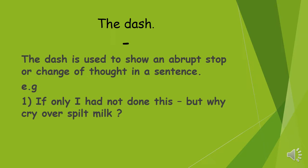So if you look at the example: 'If only I had not done this — but why cry over spilt milk?' You can see there is an abrupt change — we are talking about something that we did and then regretting it. For those of you not familiar with the phrase, 'why cry over spilt milk' means it has happened and there is nothing you can do about it — the milk is spilt, you can't put it back into the container.